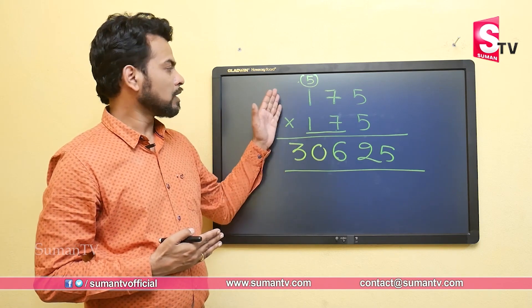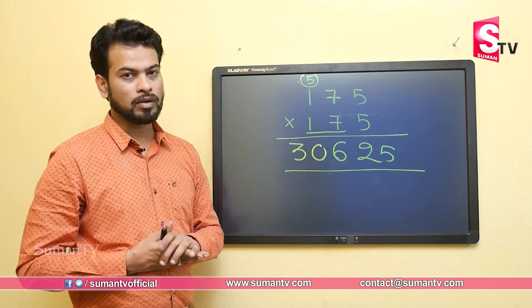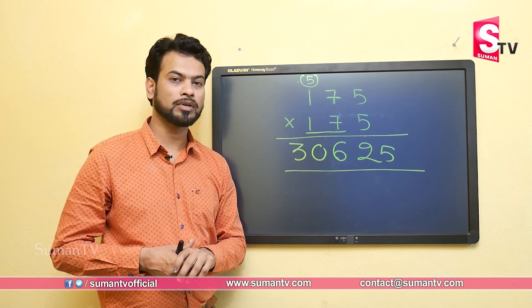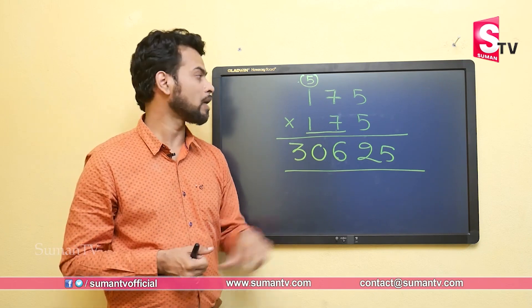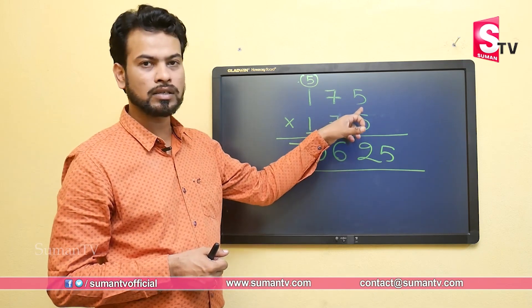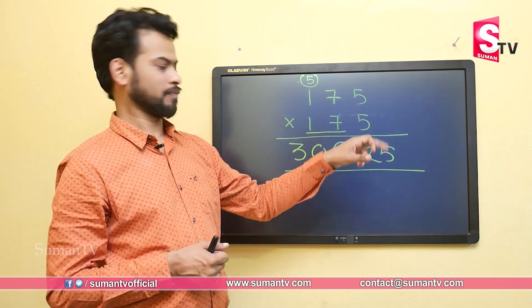In this trick, we learned how to find squares of double digit and triple digit numbers where the unit digit is 5.